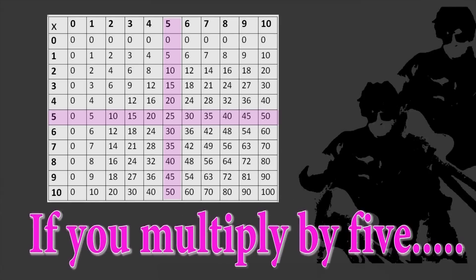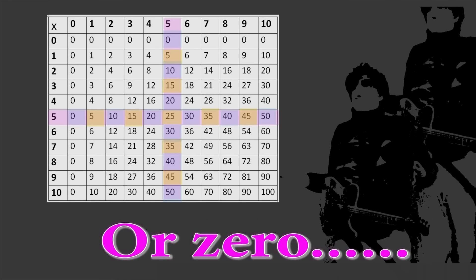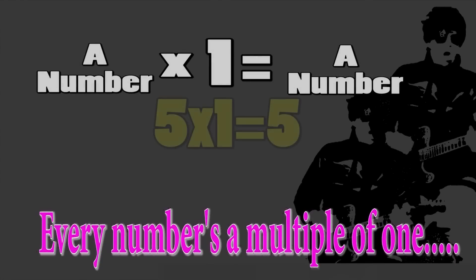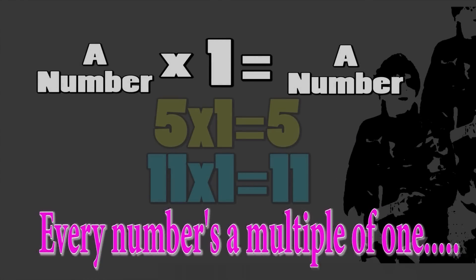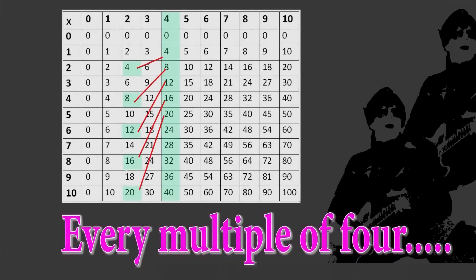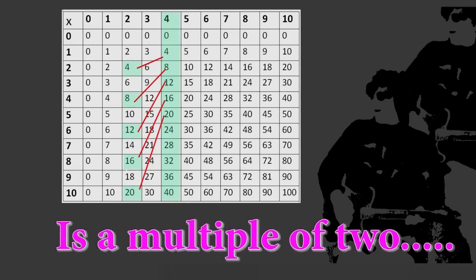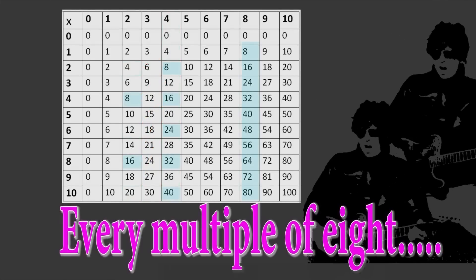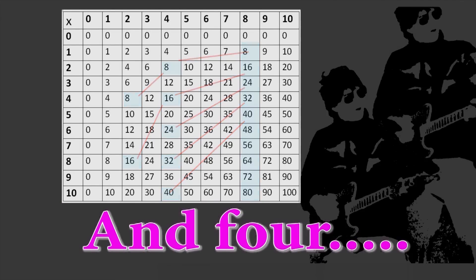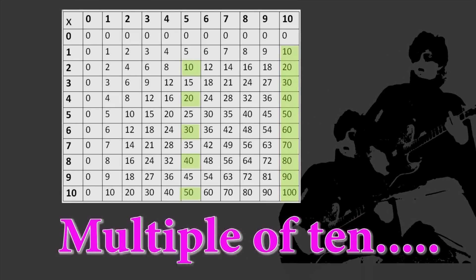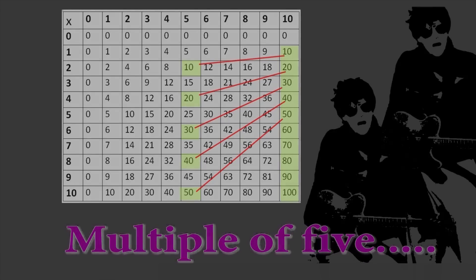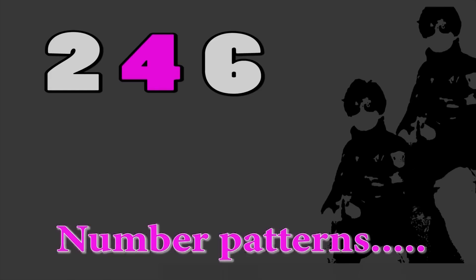If you multiply by five your product ends with five or zero. Every number is a multiple of one. Every multiple of four is a multiple of two, and every multiple of eight is a multiple of two and four. And every multiple of ten is also a multiple of five.